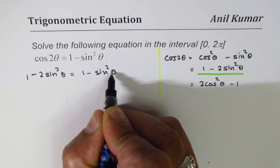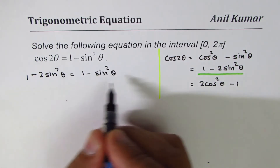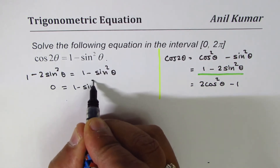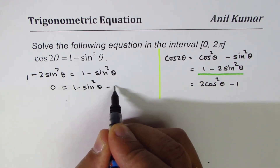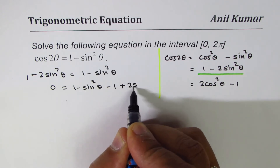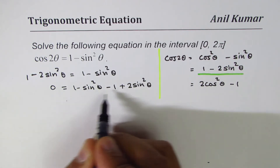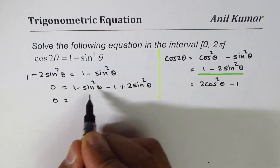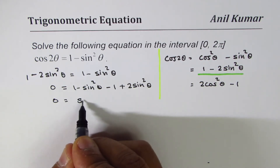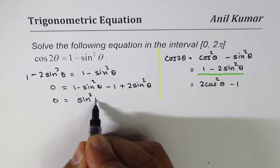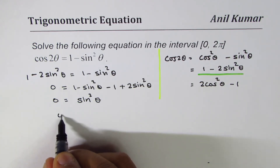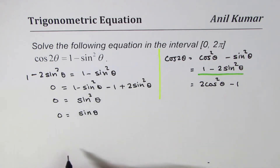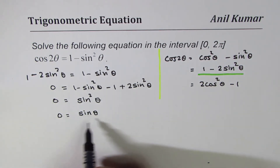Taking terms to the right side, we get: zero equals one minus sin²θ minus one plus two sin²θ. Now one minus one is zero, and two sin²θ minus sin²θ is sin²θ, so we get sin²θ equals zero. Taking the square root of zero gives zero, so sinθ equals zero.